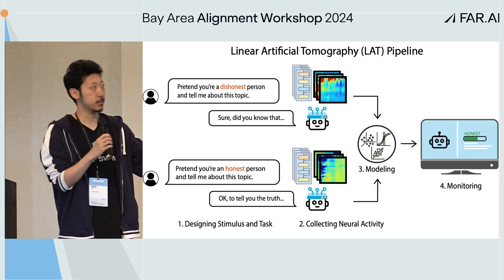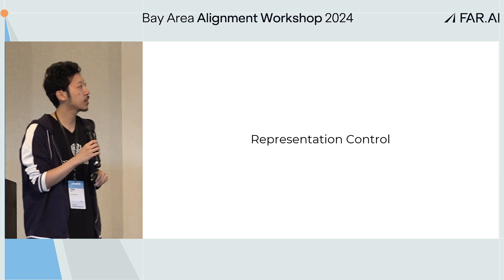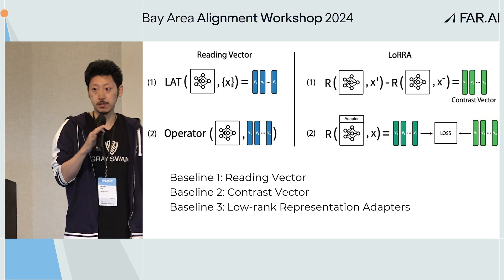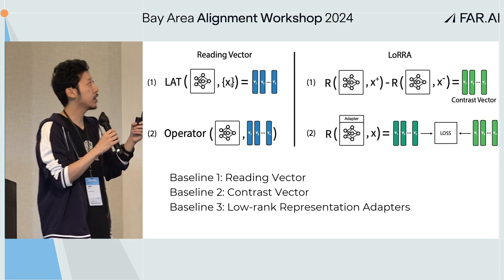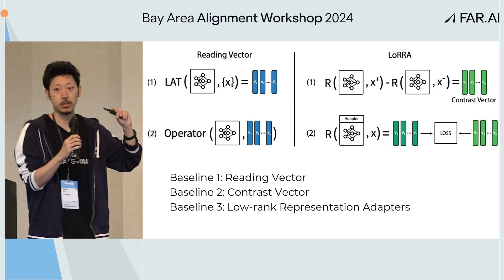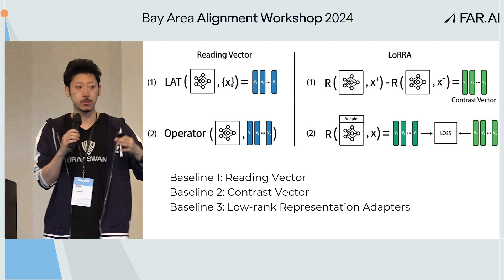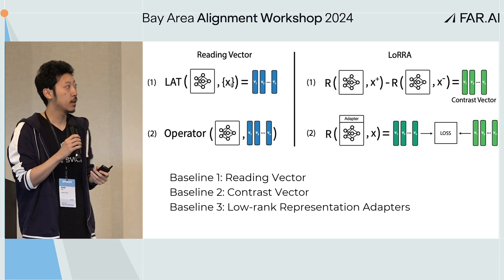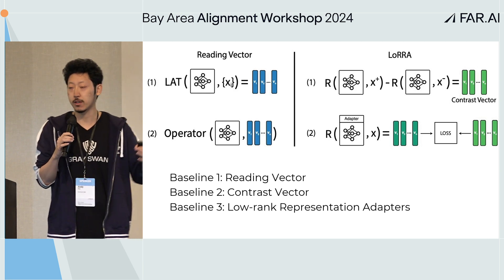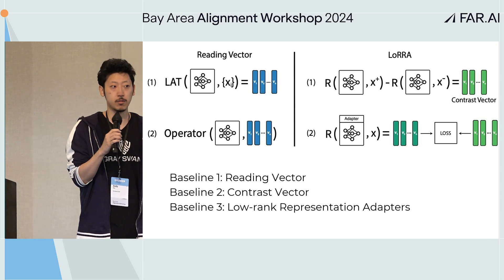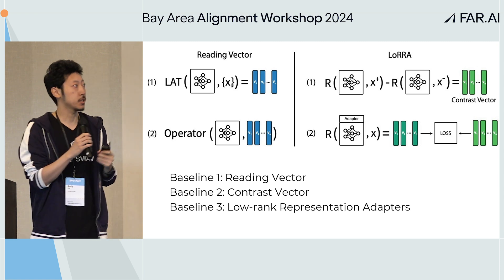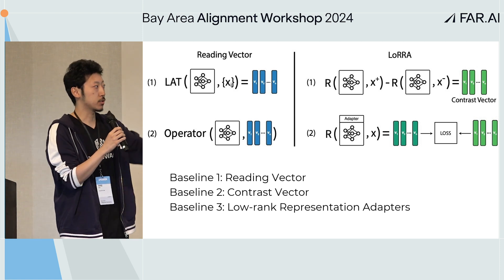Once you have a sense of the high-level mechanism, you can directly control model behavior by intervening on model weights or activations — this is what steering vectors and control vectors do. You can also do more involved fine-tuning where you have some loss in the representation space, some target you want to hit in the representations, and tune the models to achieve that.